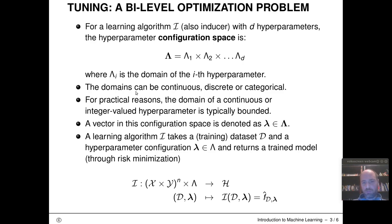Usually for practical reasons, the domains of continuous or integer-valued hyperparameters are bounded, so something like a bounded interval with a lower and an upper boundary. And a vector in this configuration space is usually denoted with a lower case lambda symbol, which is an element of this capital lambda guy here, which defines the complete feasible set of the optimization problem.